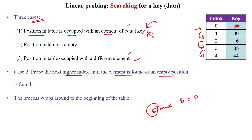We keep on checking next higher indices until the element is found or an empty bucket is found. That is the way to search data in a hash table using linear probing.